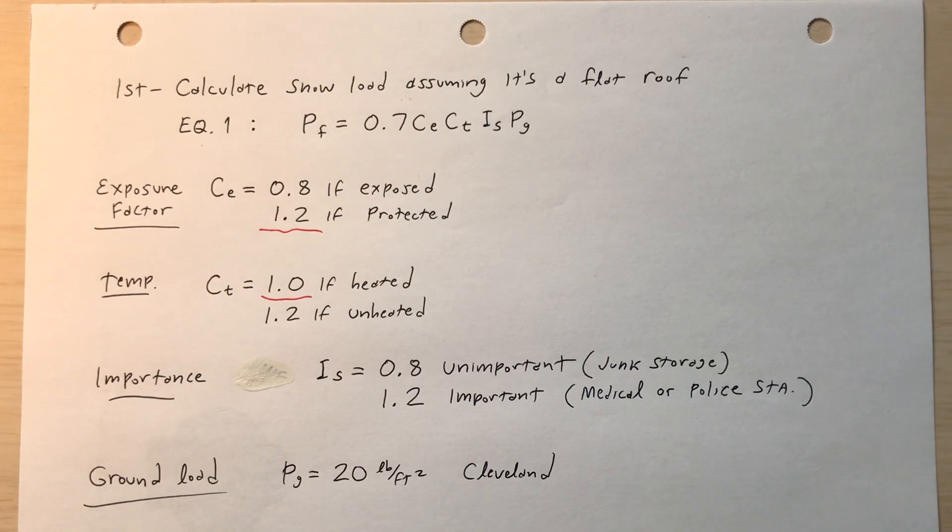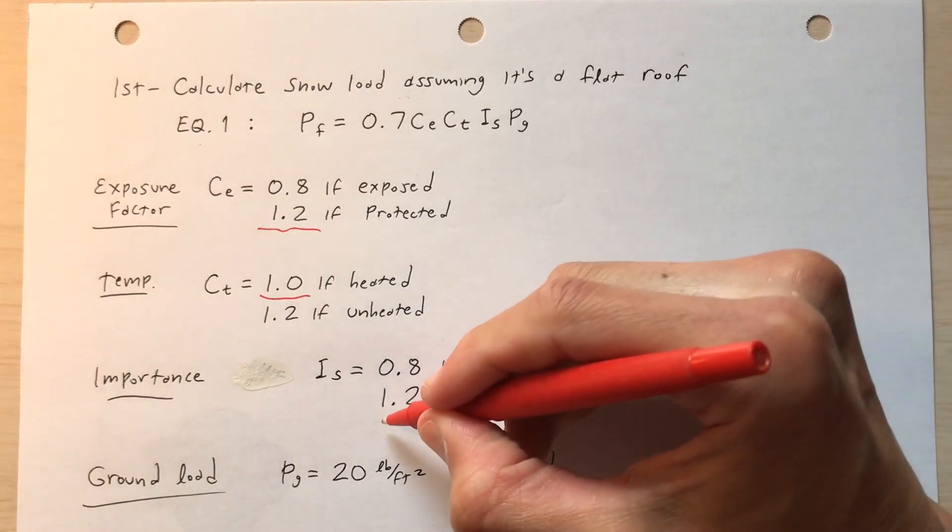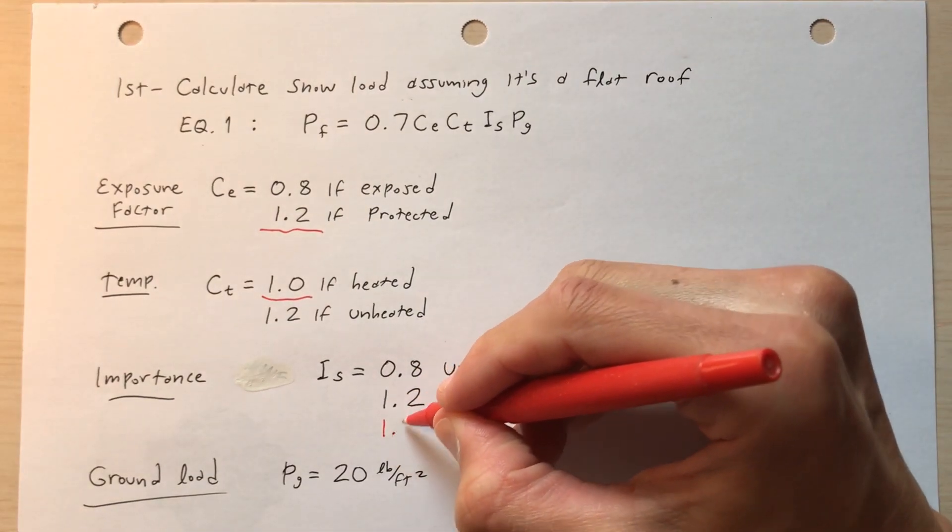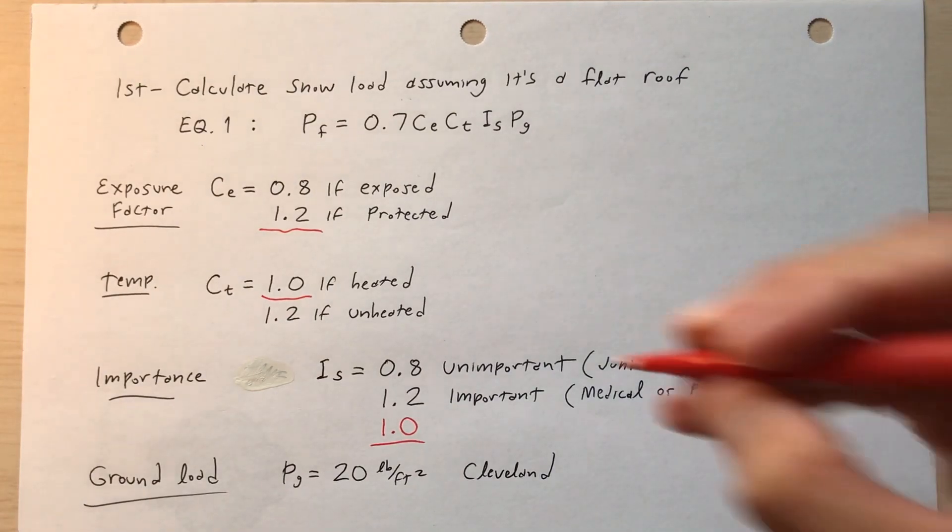And then the importance factor, i_s, 0.8 if it's unimportant, for example, a junk storage. And it's 1.2 if it's important, for example, a medical facility like a hospital or a police station or fire station. So for us, I'll assume that it's 1.0. I usually will assume 1.0 for a general purpose building.